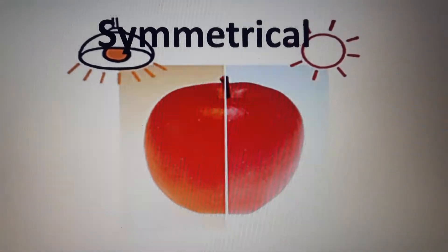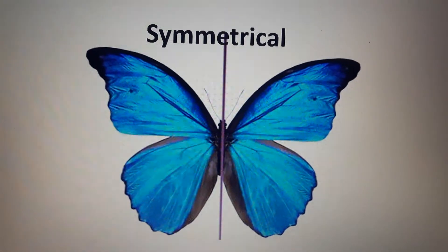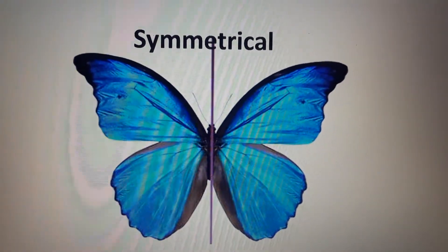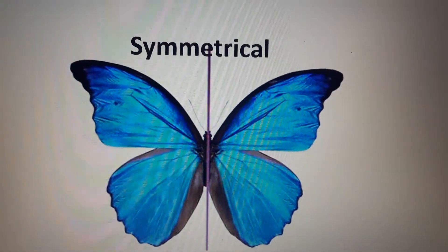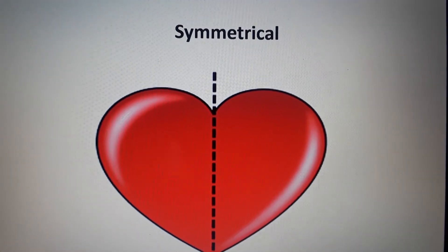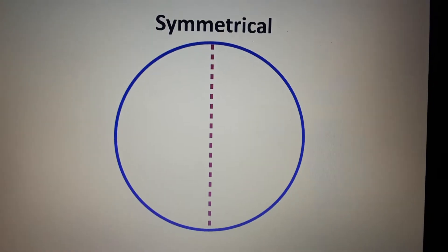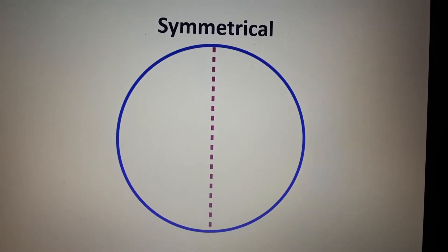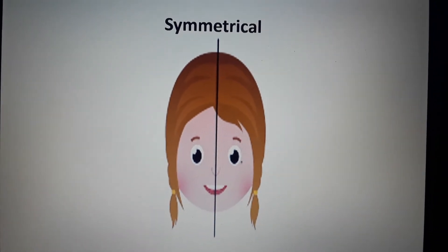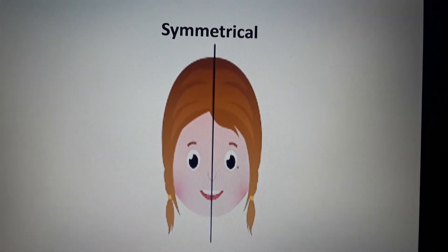Both sides look the same. Look at the butterfly — the butterfly is symmetrical. The right side and the left side both look exactly the same. Look at the heart — the heart is symmetrical, both sides look the same. Look at the circle — the circle is symmetrical.